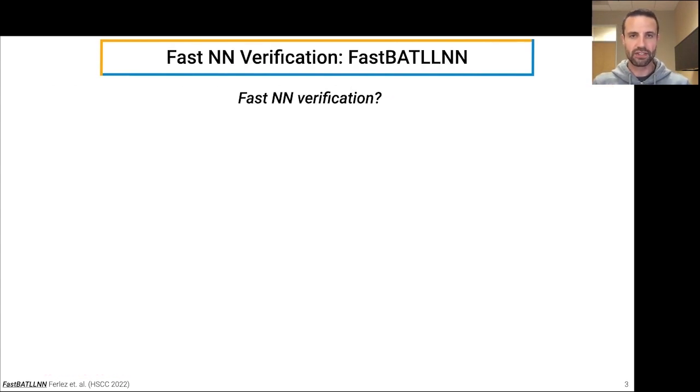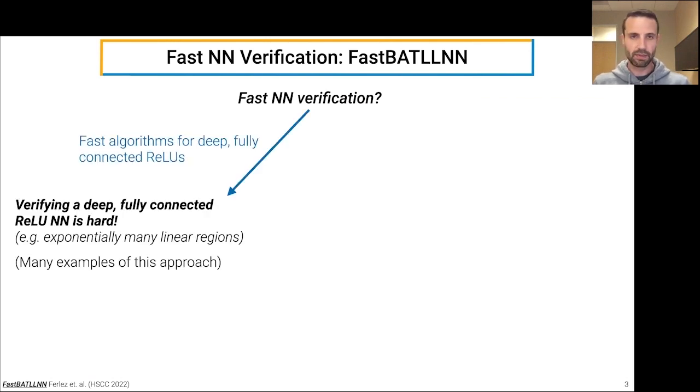So since we have to do so many verifications, we'd like our neural network verifiers to be as fast as possible. The typical approach to this is just to come up with the fastest possible algorithm for generic, deep, fully connected neural networks. There are many examples of this approach. Unfortunately, this approach is known to be hard in the worst case, because you can have exponentially many linear regions.